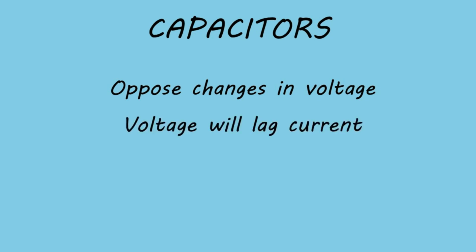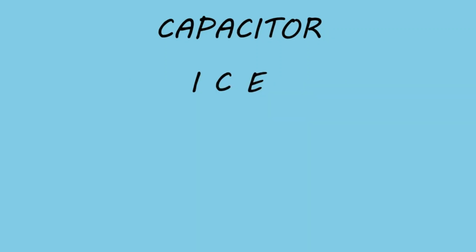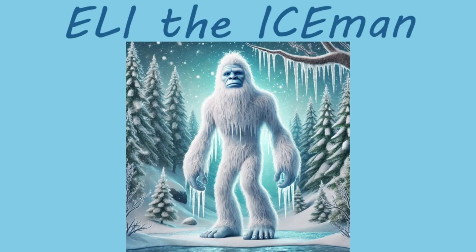And now capacitors, on the other hand, resist changes in voltage by storing energy in an electric field. As the capacitor charges and discharges, it causes the voltage to lag behind the current. And this is remembered with the memory aid ICE, I-C-E. In a capacitive circuit, current leads voltage. Some people like to remember this with the mnemonic ELI the ICE man.